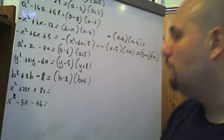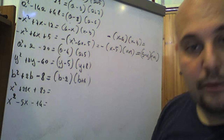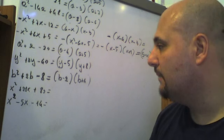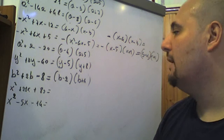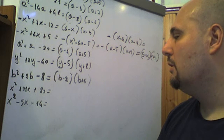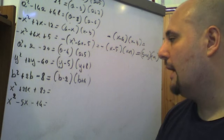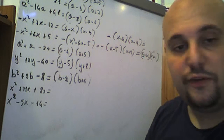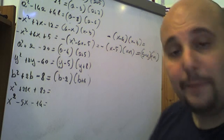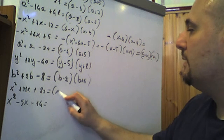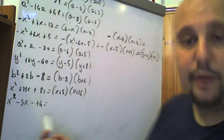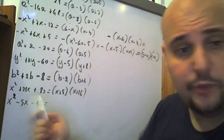X² + 21x + 80: dobbiamo pensare a due numeri che moltiplicati diano 80 e sommati diano 21. 80 è 4 × 20, ma anche 8 × 10 — però 8 + 10 = 18, non 21. 80 è anche 5 × 16, e infatti 5 + 16 = 21. Quindi è (x + 5)(x + 16), scomposizione di x² + 21x + 80.